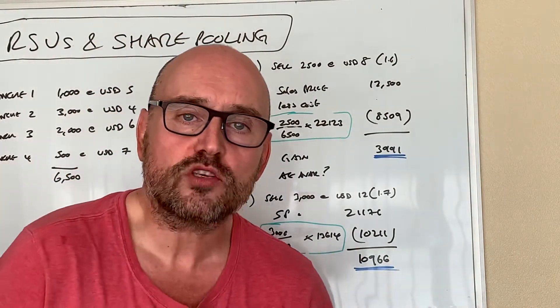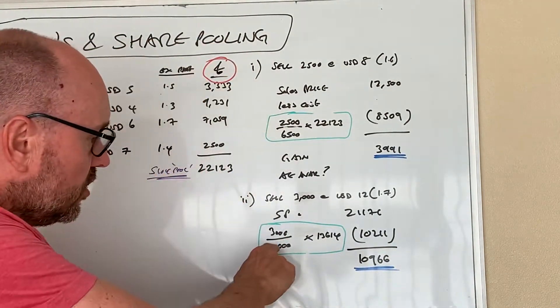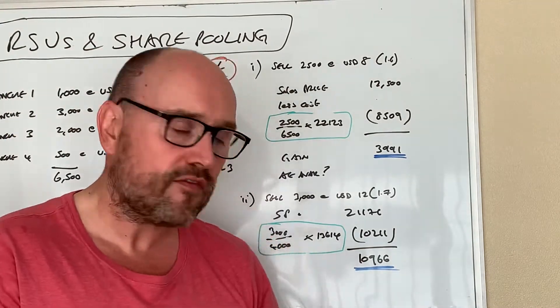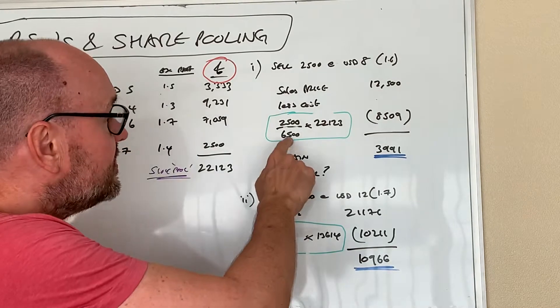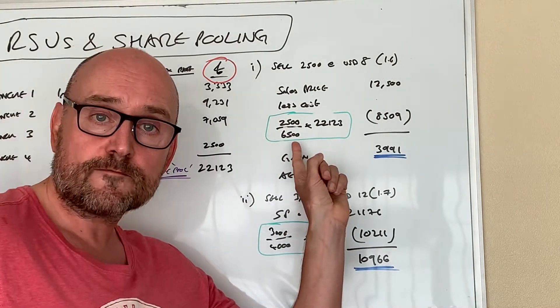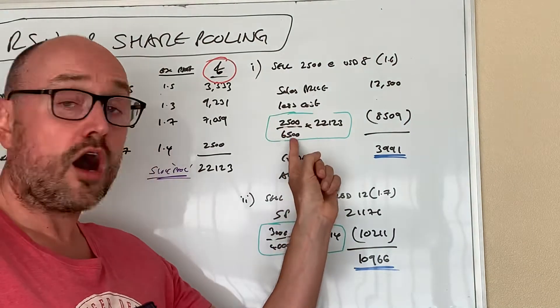Capital gain is always the same, it's difference between sales price and cost price. So the deemed cost price on this, again coming back to our part disposal of our pool, three thousand pounds is the number of shares that he's getting rid of over four thousand pounds.